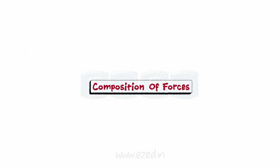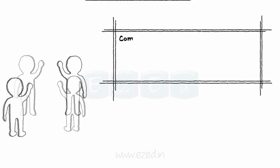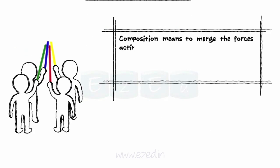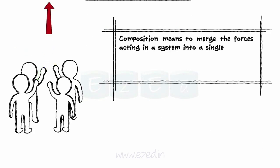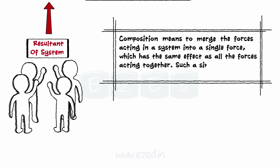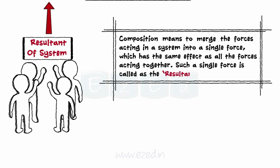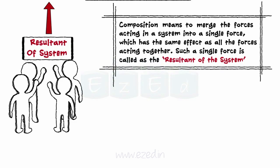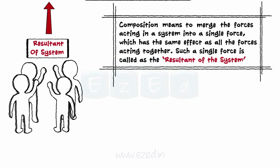Now we will learn about composition of forces. Composition means to merge the forces acting in a system into a single force, which has the same effect as all the forces acting together. Such a single force is called as the resultant of the system. Finding the resultant helps to study the effect of all the forces on the system.